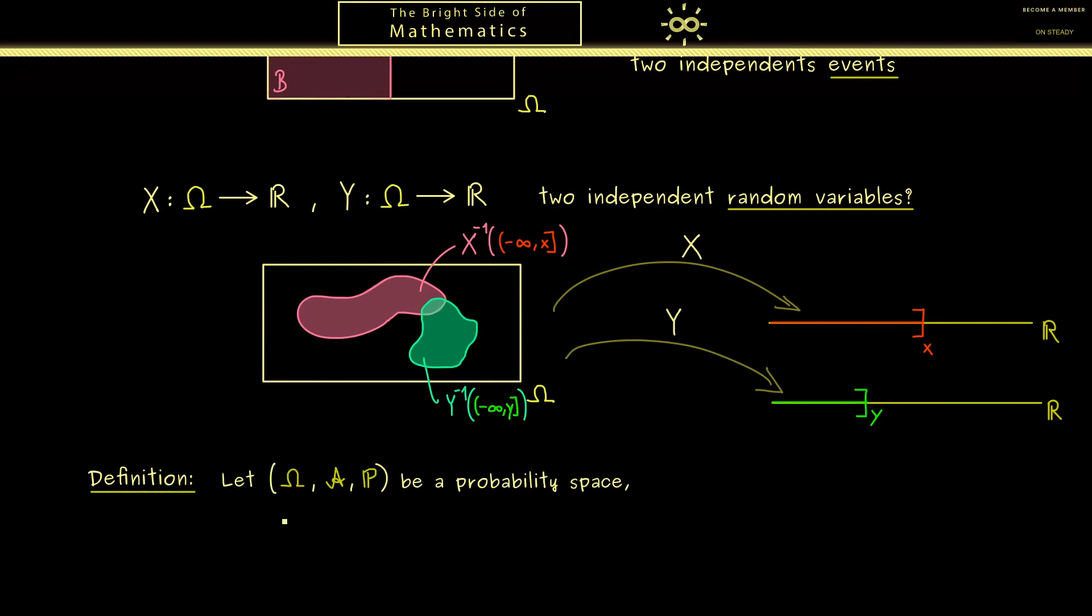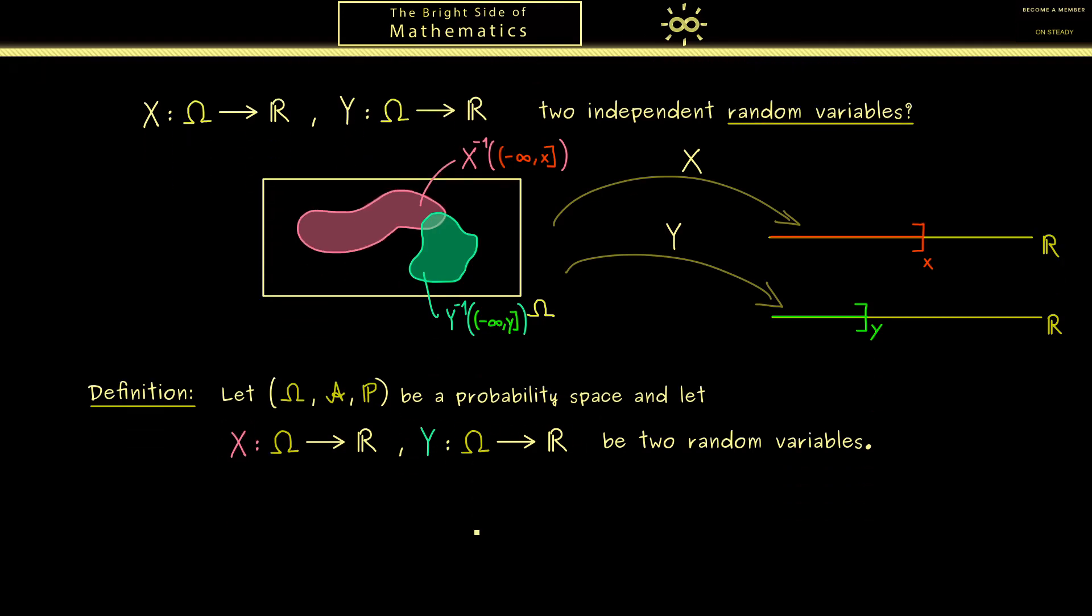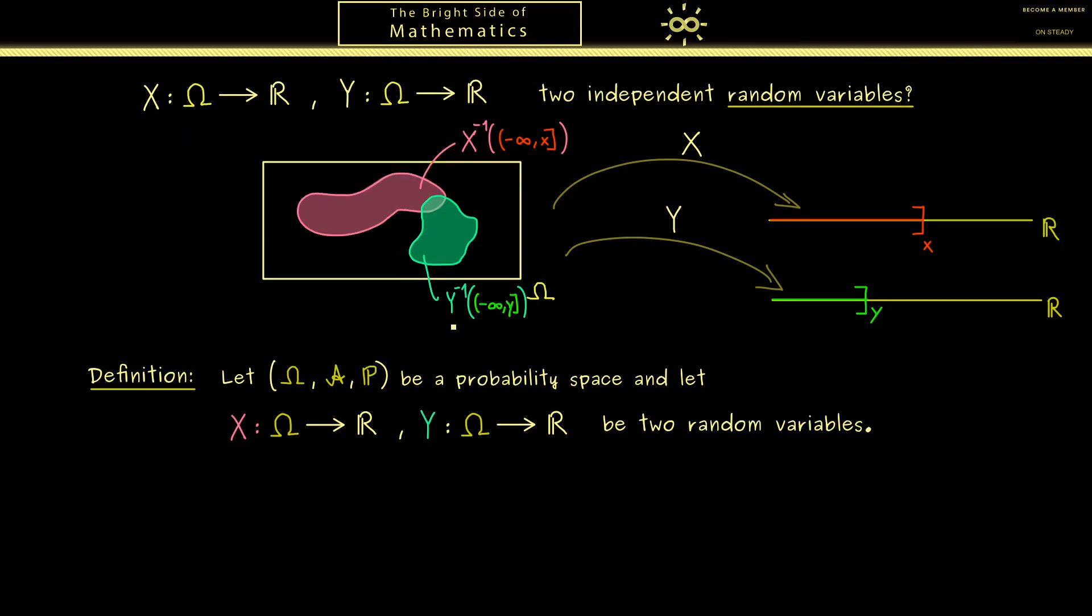As often we take a whole probability space which means we have a sample space omega, a sigma algebra A, and a probability measure P. And as you have seen above what we also need are two random variables X and Y. Please note both are real valued and defined on omega.